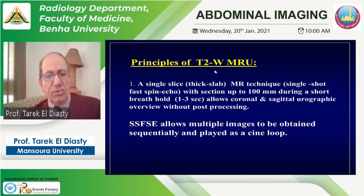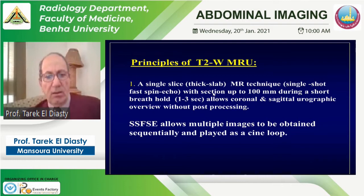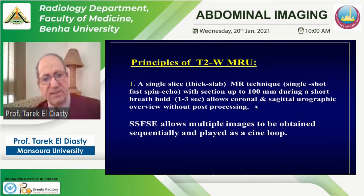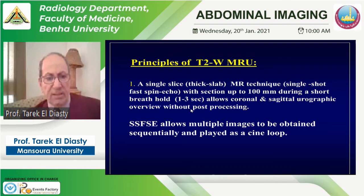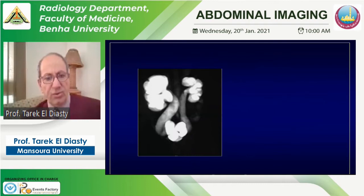For the T2-weighted static type, there are two techniques. The first is the single-slab technique using single shot fast spin echo — it uses one slice up to 10 centimeters thickness in a very short time, around three seconds. In this fast slab technique we can see coronal and sagittal images only, without any possibility for post-processing. If we want to see multiple images in a cine view, we can acquire this single shot fast spin echo as multiple images.